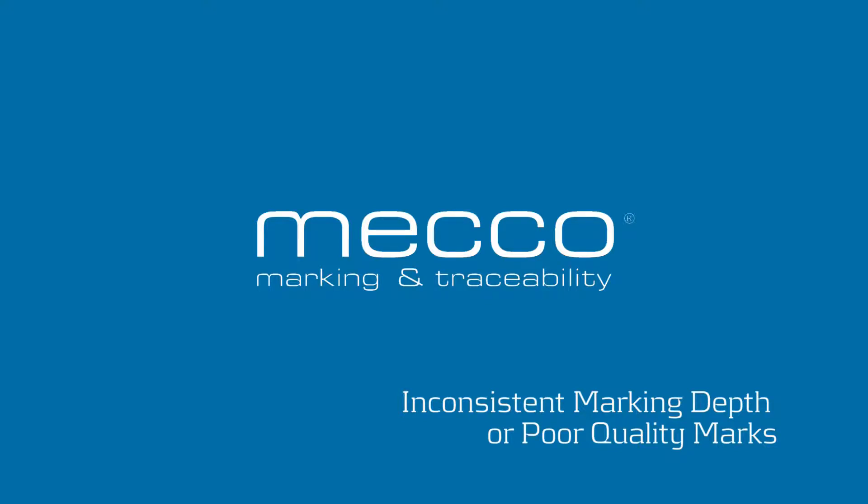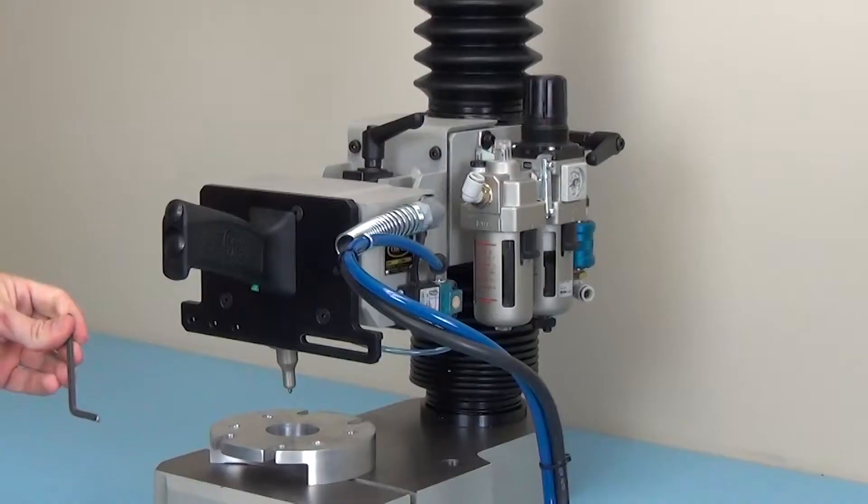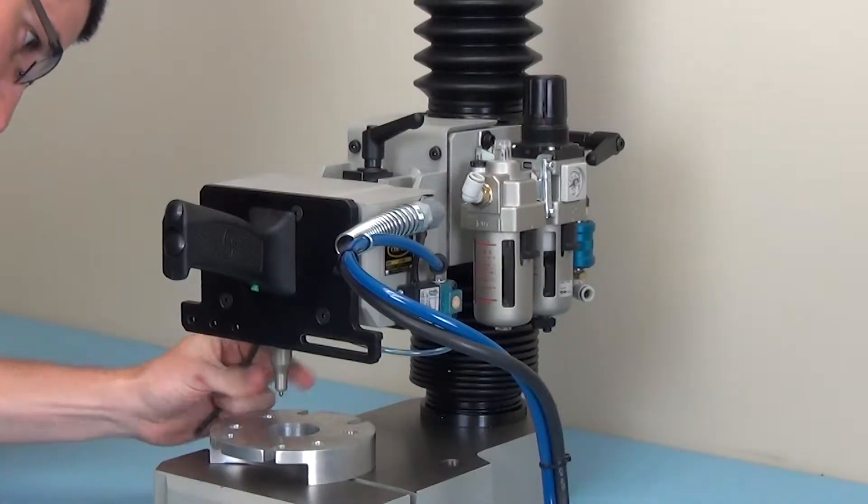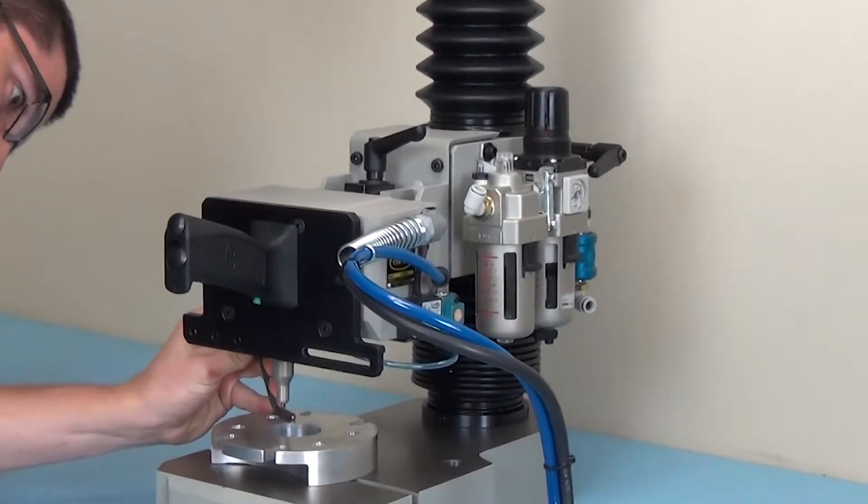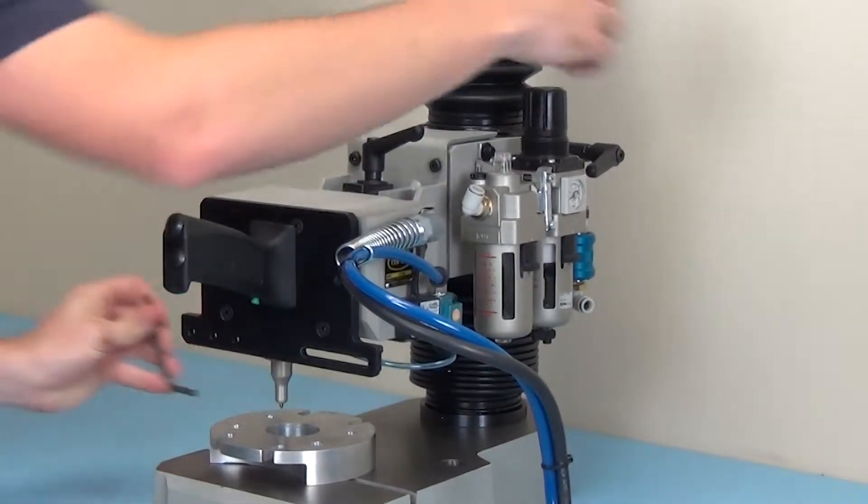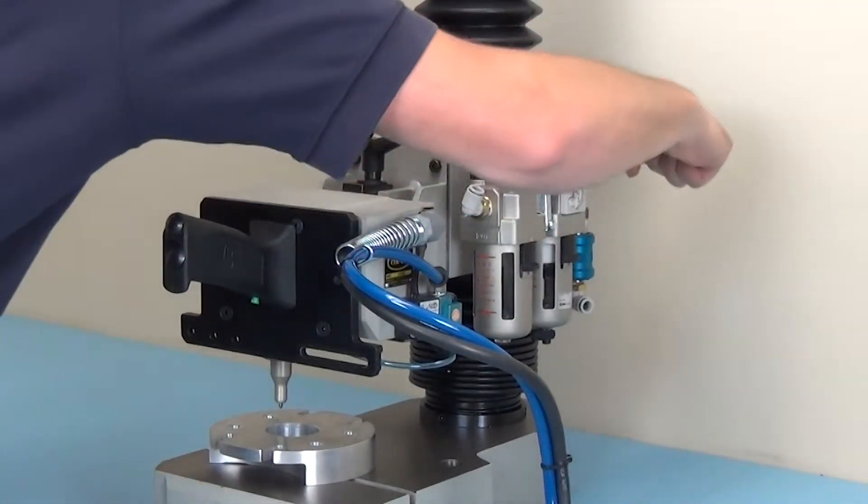This video explains how to troubleshoot your machine for inconsistent marking depth or poor quality marks. Check to make sure the correct standoff is set from pin to the marking surface. For instructions on how to do so, refer to our checking and setting standoff video.